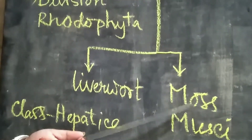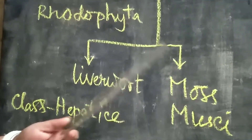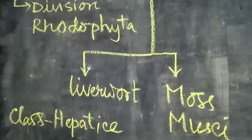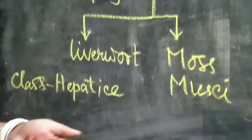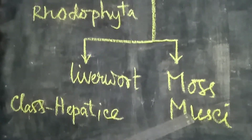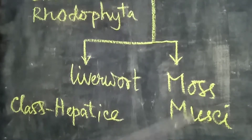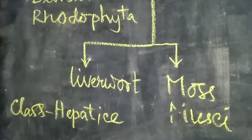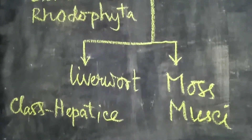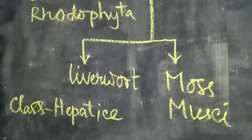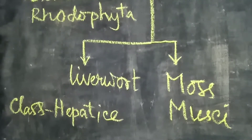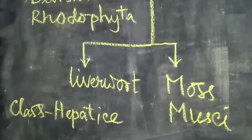Next class is Mosses or Musci, also called mosses. The gametophyte is represented by two stages: one is the primary protonema and the second is the gametophore. Primary protonema develops directly from the spore, and the gametophore represents an erect stem bearing spirally arranged leaves that attach to the soil through multicellular branched rhizoids.